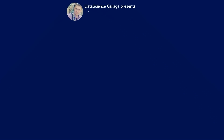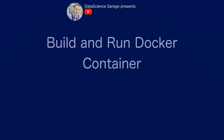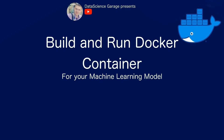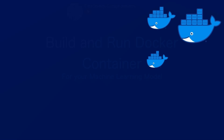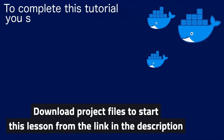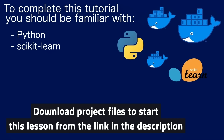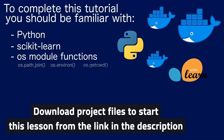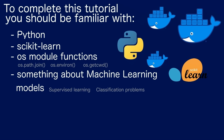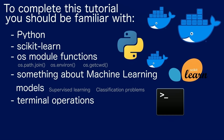Hello guys. The idea of this tutorial is to do a quick and easy build of a local container with a simple machine learning model and run it. To complete this tutorial, you should be familiar with Python programming language, the scikit-learn package that our machine learning models are based on, OS module functions like os.path, environment variables, os.getcwd(), and something about supervised learning classification problems and terminal operations for making a Docker container.